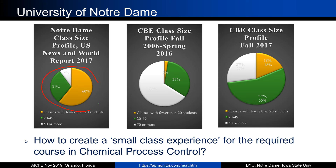Looking at class profiles, in 2016 class sizes were very large — 50 or more — and while it has improved a little since then, compared to the rest of the university where most classes have fewer than 20 students, engineering students might be missing out on that small-class experience, especially in a senior- or junior-level course like Process Dynamics and Control.